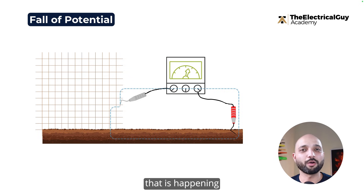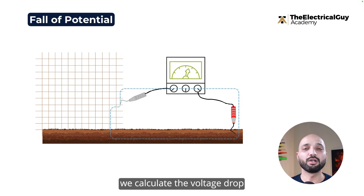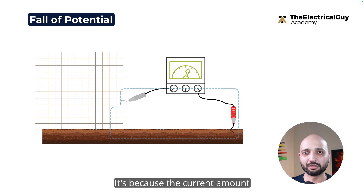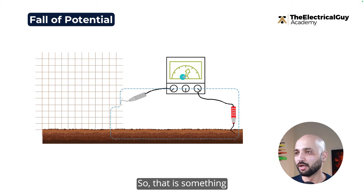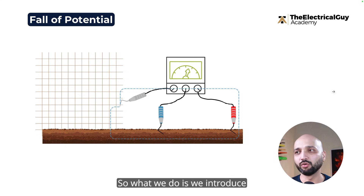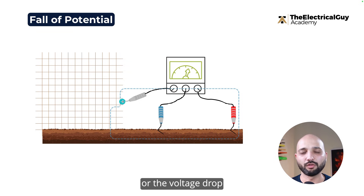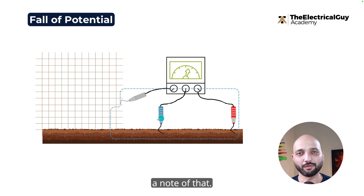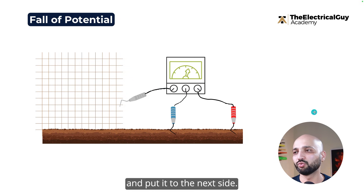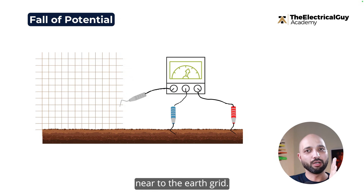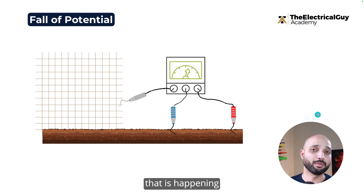We need to measure the voltage drop happening between two points so we can calculate the resistance. We know the current we are passing, so based on that we calculate the voltage drop and then the resistance. To do this, we introduce a third electrode — a potential electrode — placed in the ground closer to the grid. We then measure the potential drop between those two points, then move the electrode further away and take another reading.